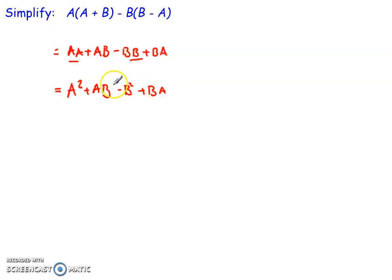Remember, AB and BA are not equal to each other, so we can't simplify any further. That's the final result. If we were to expand the brackets step by step, that would be equivalent to the simplified expression we get at the bottom once we combine everything together.